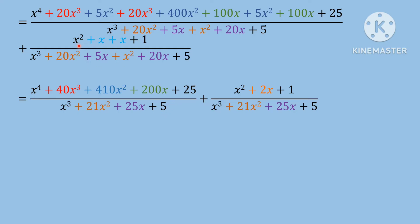x squared plus x squared; plus x plus x plus 2x plus 1 plus 1. This gives x² plus 21x squared plus 25x plus 5.